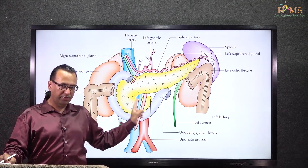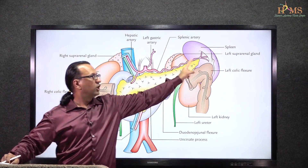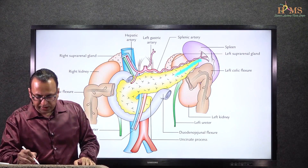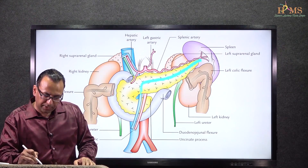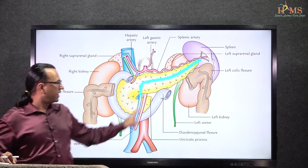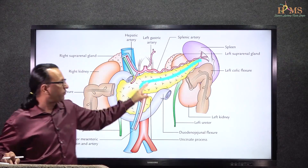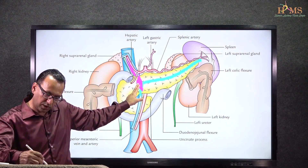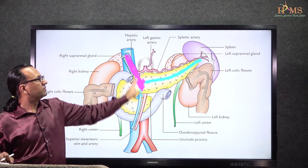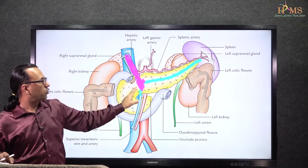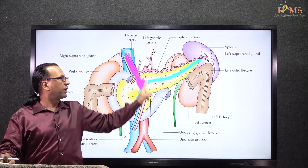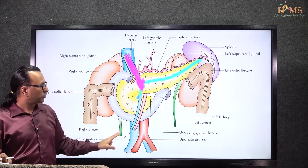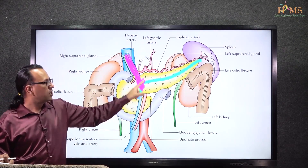The splenic artery is a branch of the celiac trunk running on the superior border of the pancreas to reach the hilum of the spleen. The splenic vein runs behind the pancreas, and behind the neck of the pancreas it is joined by the superior mesenteric vein. Together they form the portal vein, which drains into the liver.